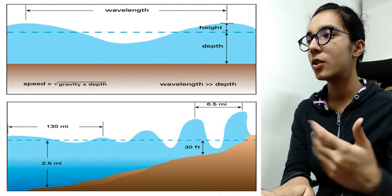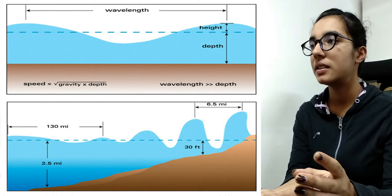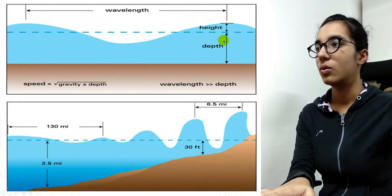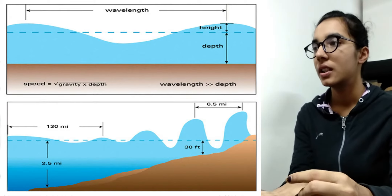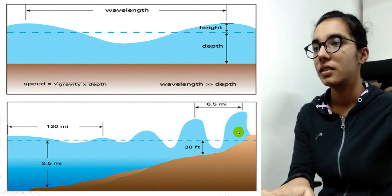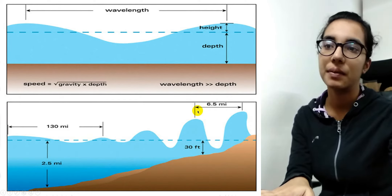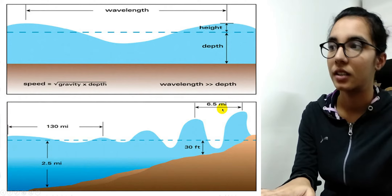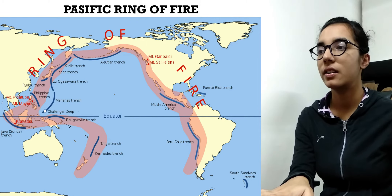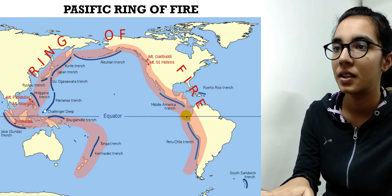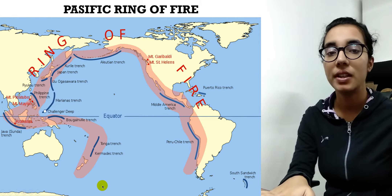Looking at the image: in deep ocean you can see a long wavelength and limited wave height. The next image shows the coast — the interaction of the wave with the bottom is increasing, thereby increasing wave height and decreasing wavelength. The tsunami is frequently observed near the Pacific Ring of Fire — the red portion in the Pacific Ocean — where volcanoes and earthquakes are seen very frequently.